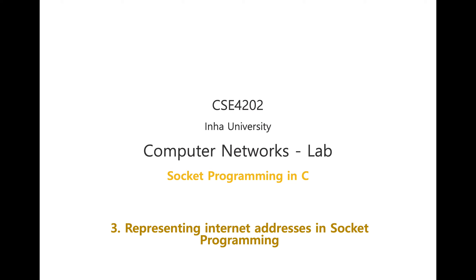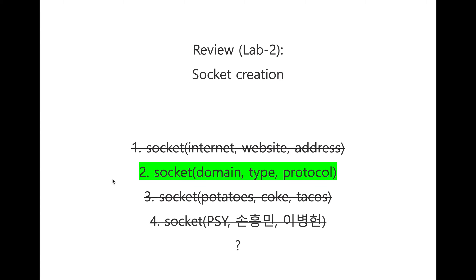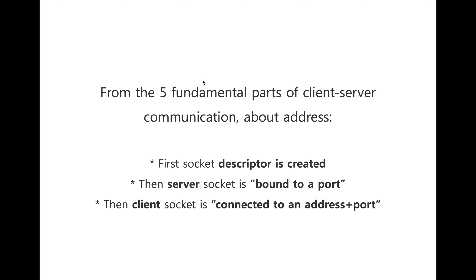Welcome back. In the third session of socket programming in C, we will be covering representation of internet addresses. Before starting session three, I want to ask a quick question from the previous slide: which one is the correct set of parameters for the socket function? The correct answer is the second option — socket that contains the domain, the type, and the protocol.